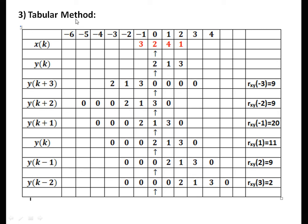Third method is the tabular method — again very easy. x(k) is fixed: {3, 2, 4, 1}; y(k) is moving: {2, 1, 3} with zeros. For y(k plus 3), move arrow right by 3 units: signal is {0, 3, 1, 2}; element multiplication gives 9. For k plus 2, shift right 2: signal starts {3, 1, 2}. For k plus 1, shift right 1: signal starts at 1 — {2, 1, 3, 0}. Original signal for k = 0. For k minus 1, shift arrow left 1: {0, 2, 1, 3}. For k minus 2: {0, 0, 2, 1, 3}.